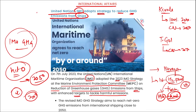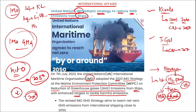The United Nations IMO has adopted strategies to reduce greenhouse gas emissions from ships, with a target of net-zero emissions from international shipping by 2050. Marine countries including India have agreed on checkpoints to reduce emissions by at least 20% and strive for 30% by 2030. IMO: Secretary General is Kitack Lim, headquarters in London UK, established in 1958.